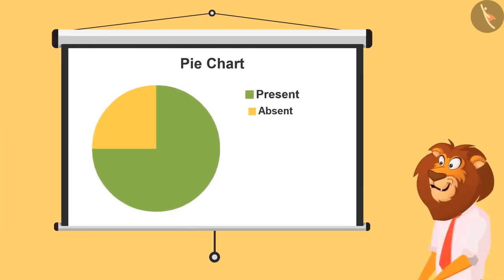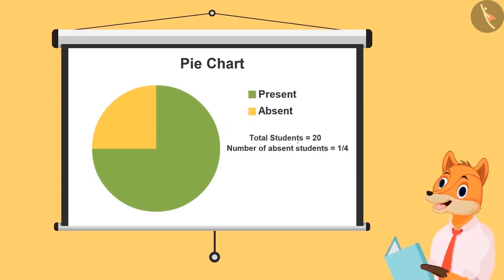These are the present kids and these are the absent kids. Here we'll find out one-fourth of 20, because absent kids are one-fourth of the total chart. So one-fourth of 20 will be, half of 20 is 10, and half of 10 is 5. So total 5 students are absent today.